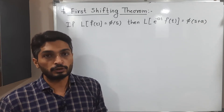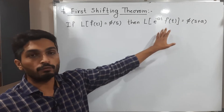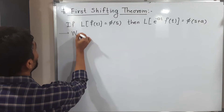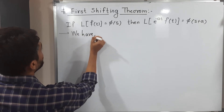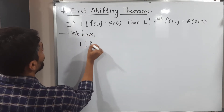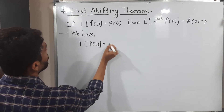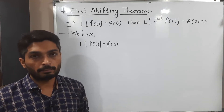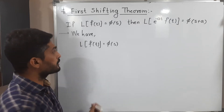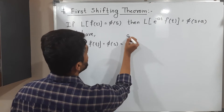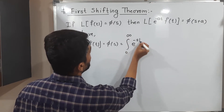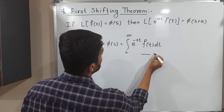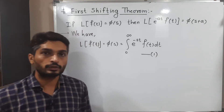We will start with the given information and then focus on what we have to prove. The given information is: Laplace of f(t) is equal to φ(s). You know the definition of Laplace transform — this is equal to the integration from 0 to infinity of e raised to minus st times f(t) dt.